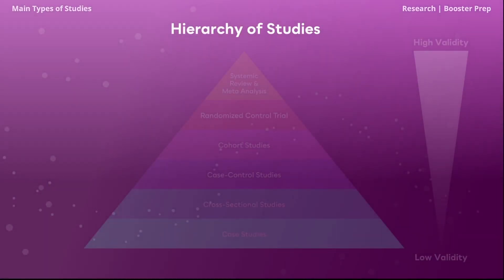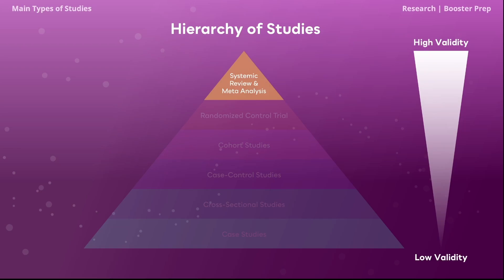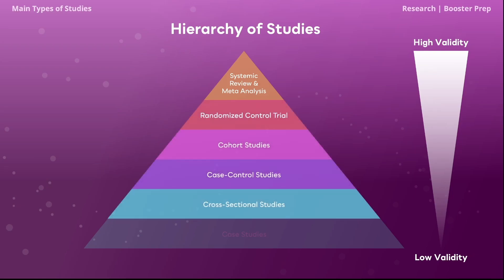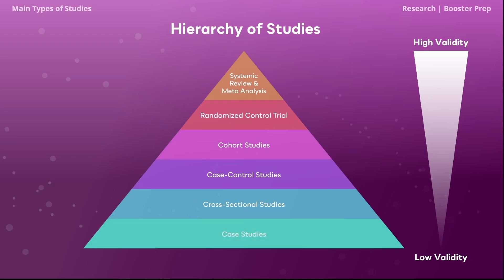Now let's move on to an extremely high-yield topic: the hierarchy of studies pyramid. At the very top are systematic reviews and meta-analyses — the most rigorous studies with the highest validity and greatest generalizability to populations. Going down the list: randomized control trials, cohort studies, case control studies, cross-sectional studies, and finally case studies with the lowest validity. The order in which all studies appear on the pyramid is high-yield. We can rationalize this pyramid by knowing that case control studies are more valid than cross-sectional studies and case studies because they contain control groups. Trials are better than observational studies because they offer more control to investigators. Reviews and meta-analyses are better than trials because they harmonize information from multiple studies, which is better than looking at one individual study alone.